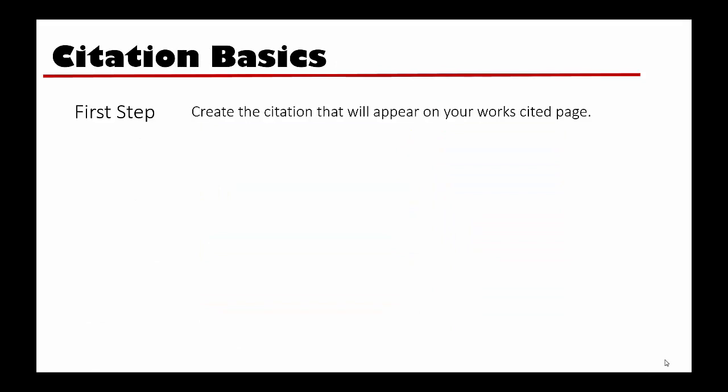Now that we know what we need to cite, how do we do it? Citing sources is a two-step process. First, you must have the citation for any source. This is what would appear on your Works Cited page at the end of your paper.